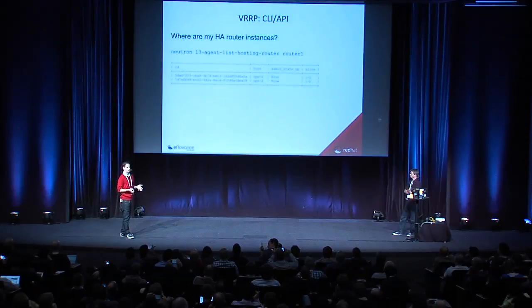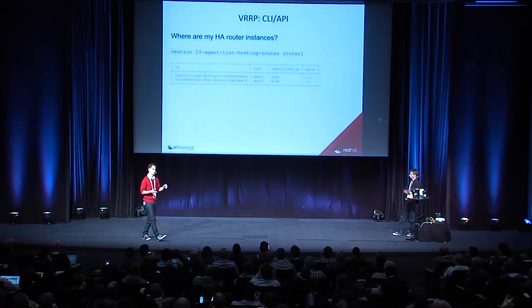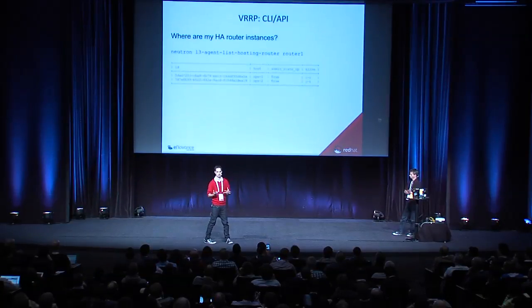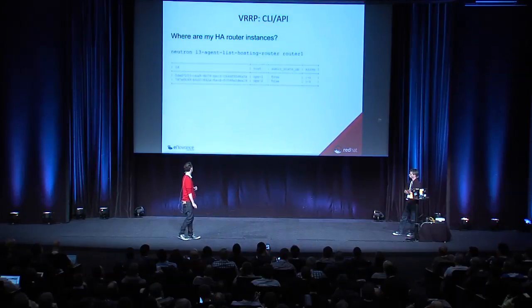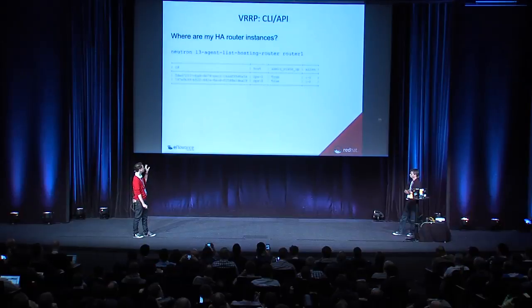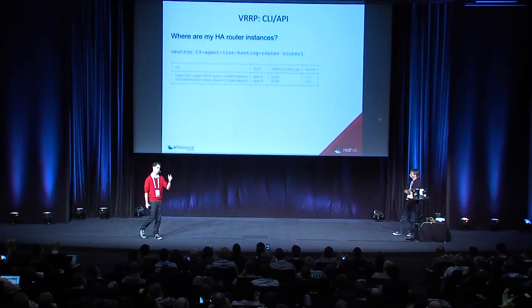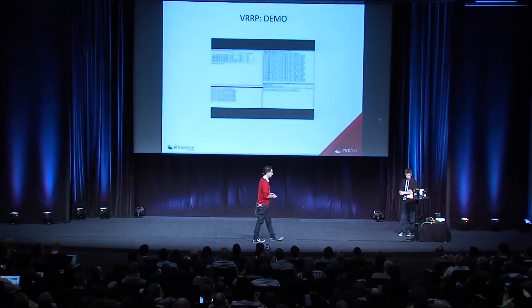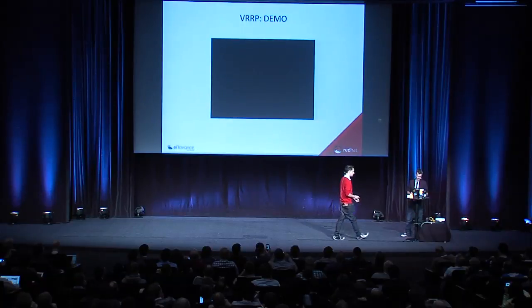If you have three agents and want to know where your router instances are, you can list all agents per router. This is what you'll get in Juno, and hopefully for Kilo, you'll also get to see where the master is and maybe even influence that. Let's head over to the demo.